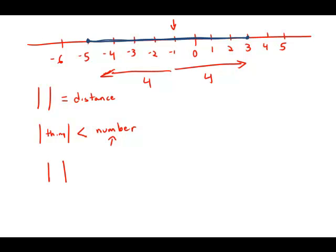The answer is going to have the form of absolute value of something is less than or equal to four. Four is a maximum distance.